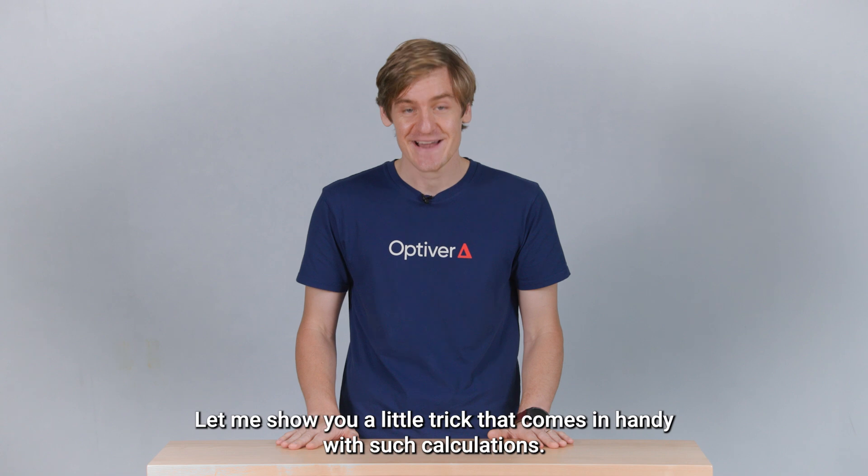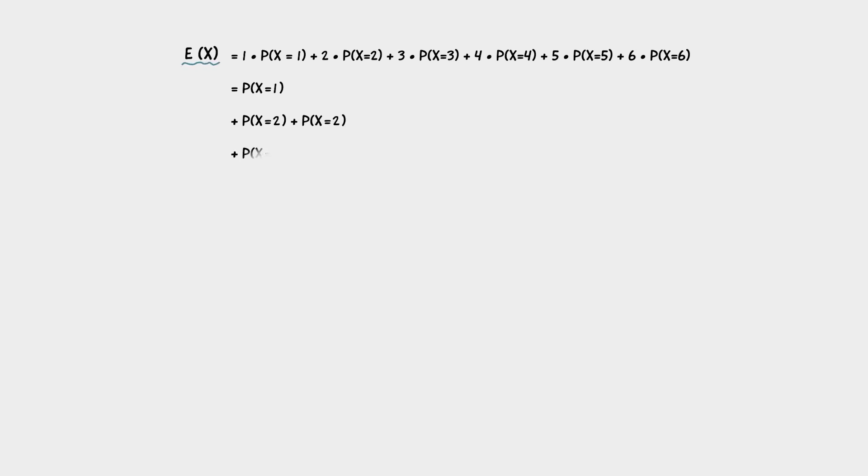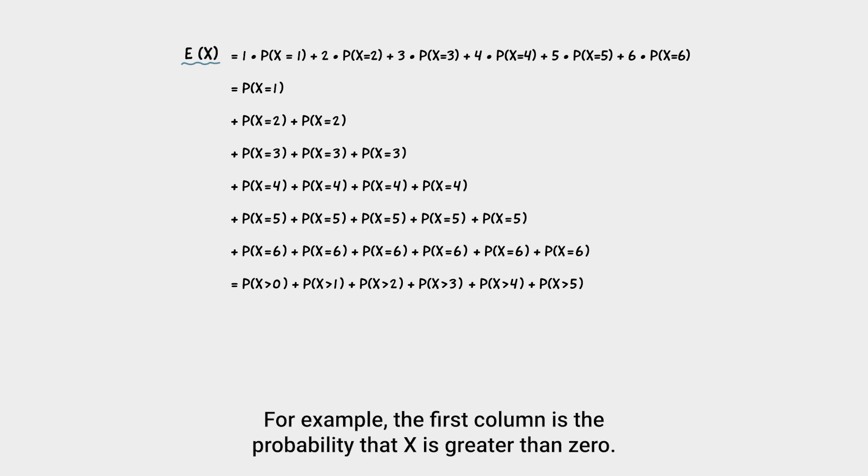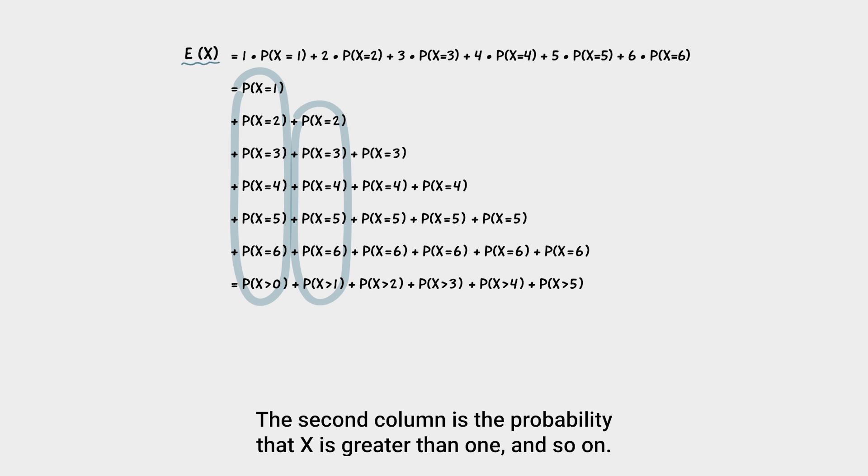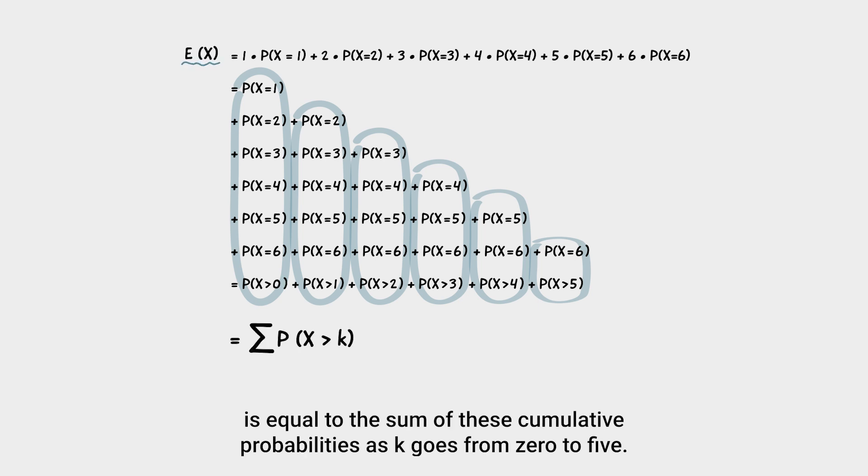Let me show you a little trick that comes in handy with such calculations. It's easier to see if we first write the sum in full and then stack it all up like a triangle. Now, what are the sums of each of these columns? Each column sum is in itself a sum of probabilities and therefore a probability. For example, the first column is the probability that x is greater than zero. The second column is the probability that x is greater than one and so on. Therefore, we have established that the expected value of x is equal to the sum of these cumulative probabilities as k goes from zero to five.